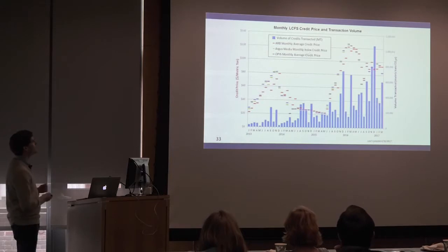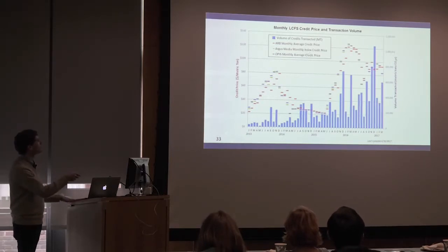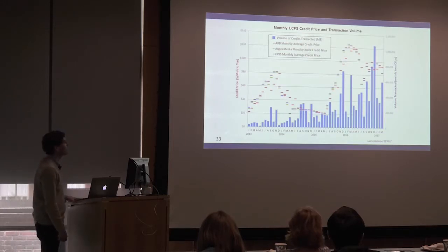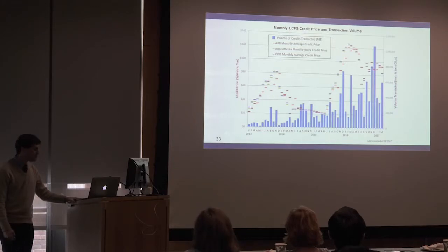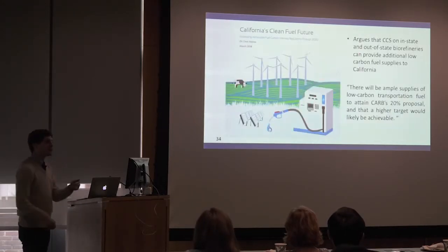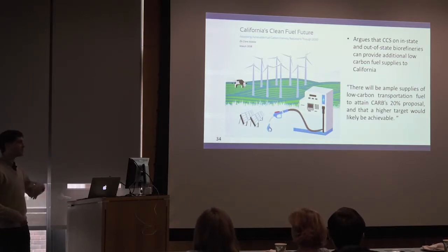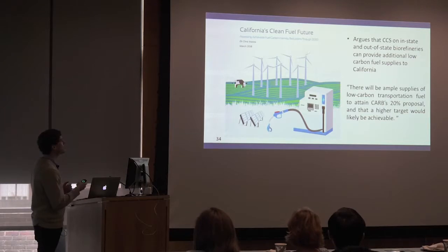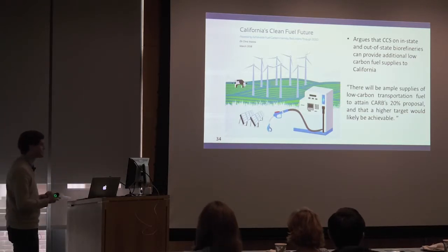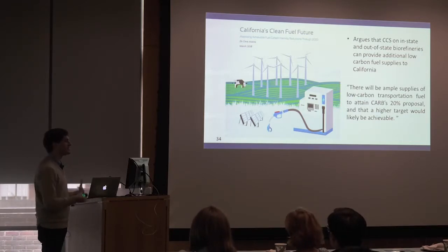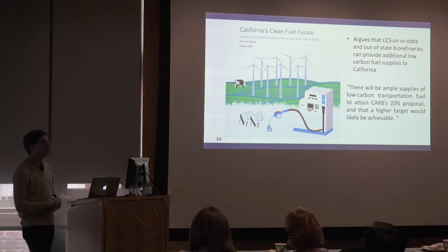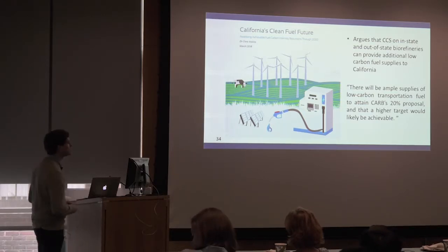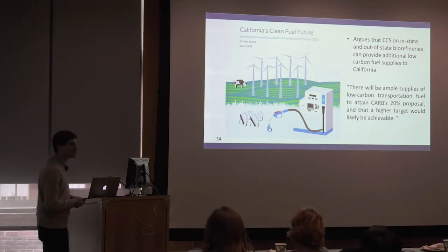The LCFS credit prices to pay a producer per ton of CO2 abated is right around $100 per ton right now. We've seen policymakers take the results of this work and argue that California can be even more ambitious in its low carbon fuels policy as a result of carbon capture opportunities on biofuels. This was a report that NextGen — Tom Steyer's group — put out along with the Union of Concerned Scientists and other advocacy groups, arguing that California will be well positioned to get past their 20% lifecycle carbon intensity reduction by 2030 and reach an even higher target.